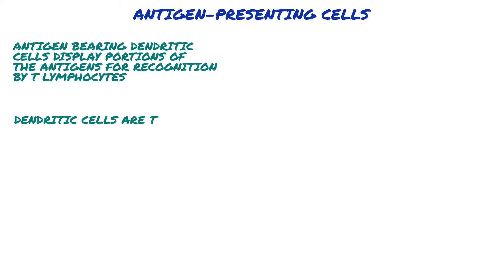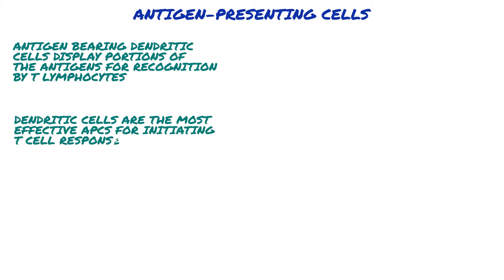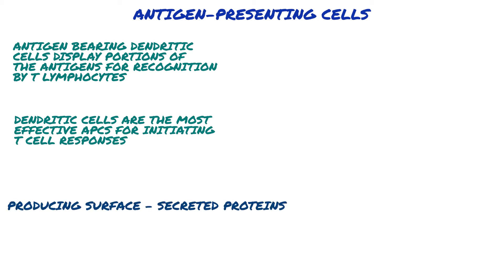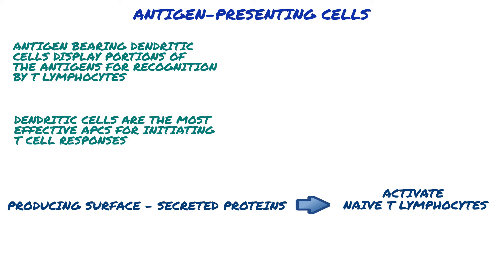Dendritic cells are the most effective APCs for initiating T cell responses. Cells that are specialized to display antigens to T lymphocytes have another important feature: they respond to microbes by producing surface and secreted proteins that are required together with antigen to activate naive T lymphocytes to proliferate and differentiate into effector cells.